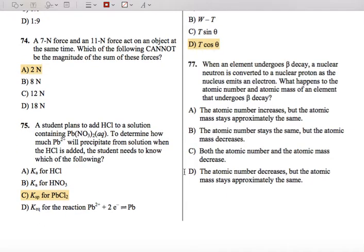77. When an element undergoes beta decay, a nuclear neutron is converted into a nuclear proton as a nucleus emits an electron. So I know this question actually gives you the description of beta decay, but I wouldn't count on getting that description if you ever encounter this type of problem again. So memorize the different types of decay, alpha, beta, stuff like that. It's definitely, I mean, you might not see it on your exam, but it could be there, so you should know it.